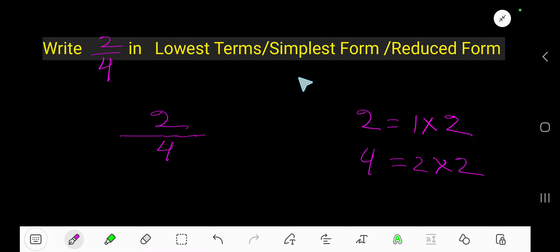Write 2 over 4 in lowest terms, simplest form, or reduced form. Okay, to simplify this fraction we need to divide numerator and denominator by the common factor.